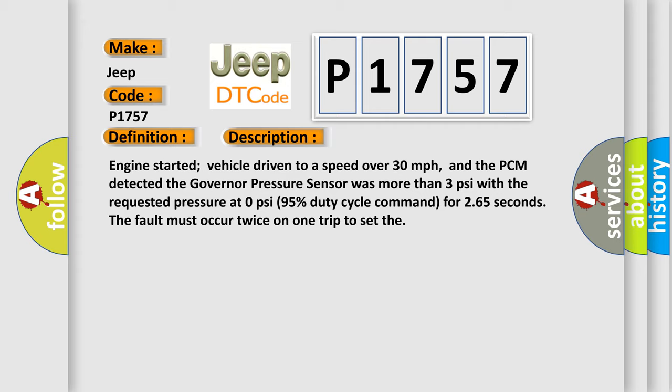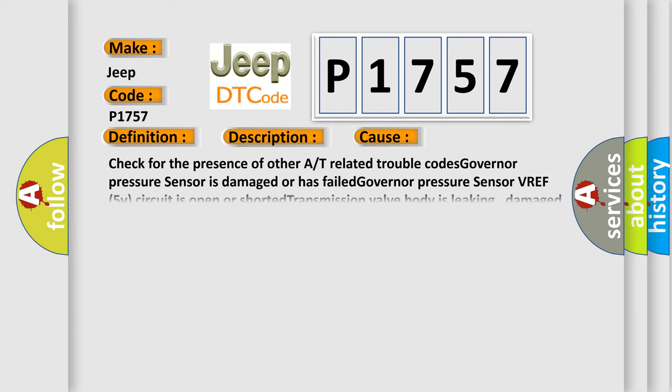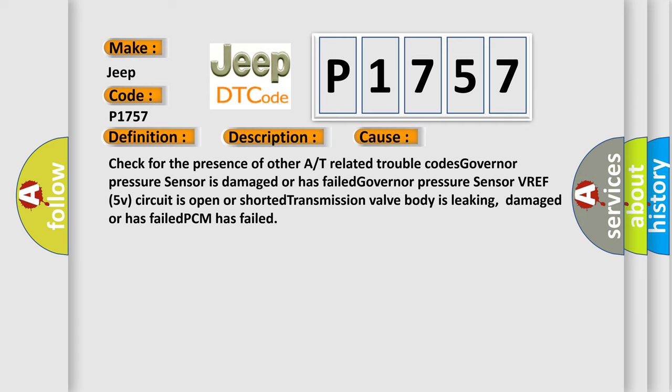This diagnostic error occurs most often in these cases: Check for the presence of other A or T related trouble codes. Governor pressure sensor is damaged or has failed. Governor pressure sensor VREF 5V circuit is open or shorted. Transmission valve body is leaking, damaged or has failed.